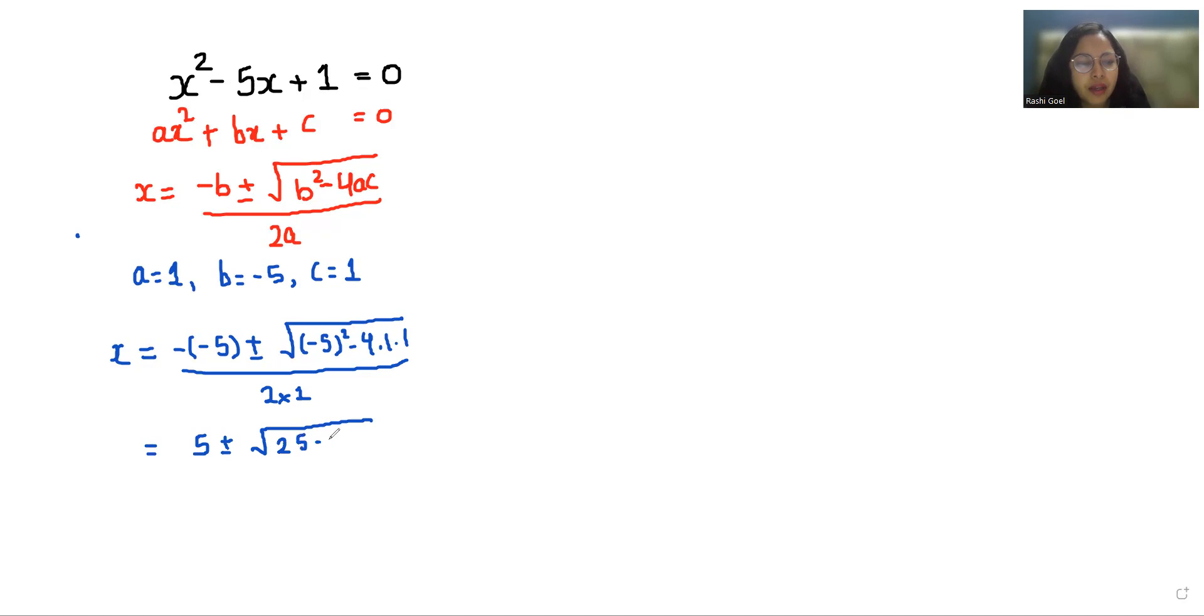25 - 4 = 21, so this gives us 5 ± √21/2. We know that